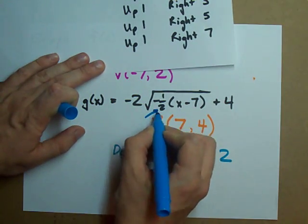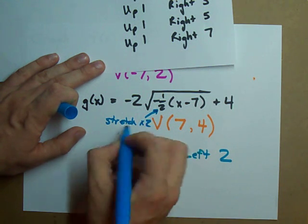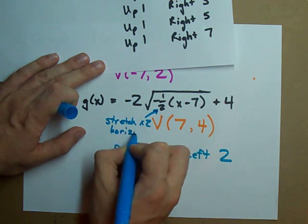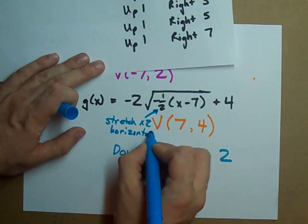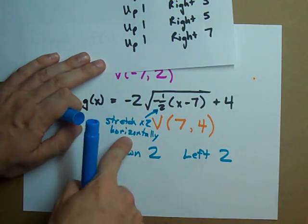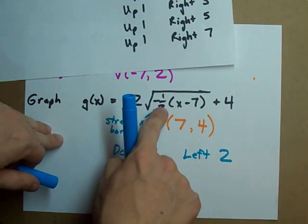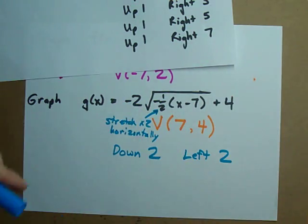And we're going two instead of one because we are stretched horizontally by a factor of two. Be careful. This half means stretch by two horizontally. That's one of the tricks in transformations. One half on the inside of the function actually means stretch.